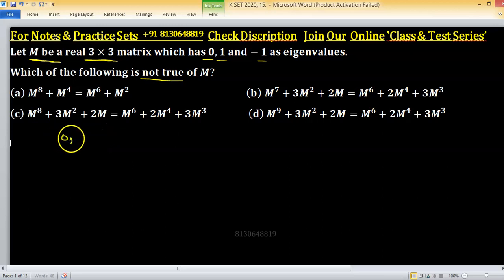Because 0, 1, and minus 1 are eigenvalues of this matrix M, the characteristic polynomial in terms of x will be x times (x minus 1) times (x plus 1). This is the characteristic polynomial and the equation equals 0.